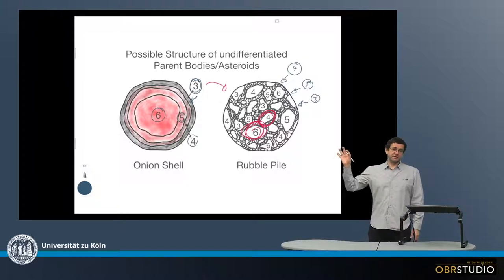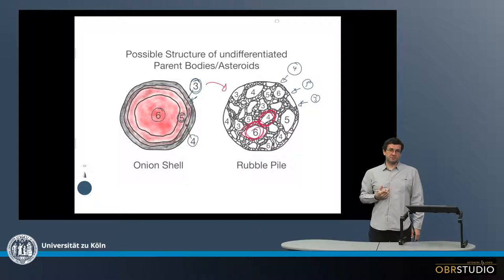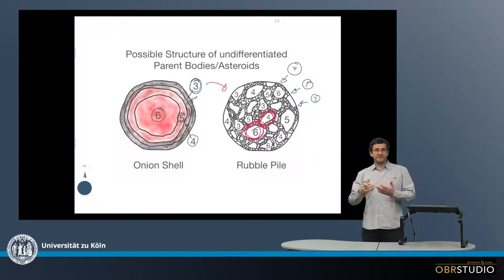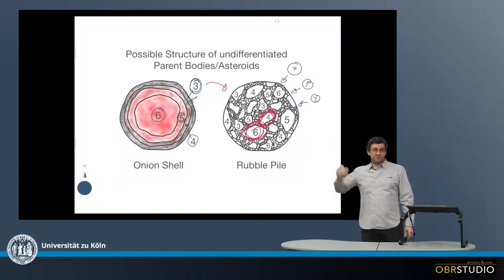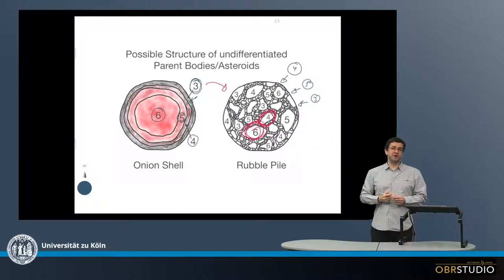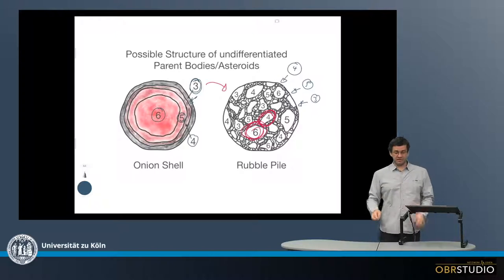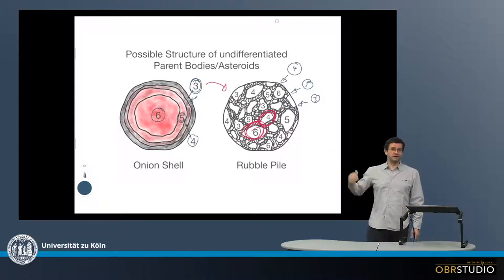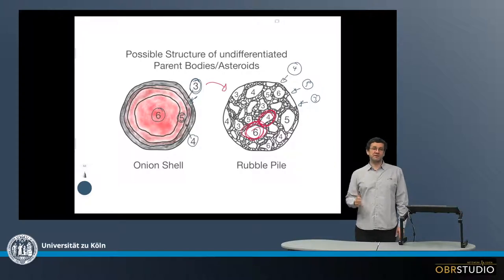These are the different types of lithologies and parent bodies we think existed, because we also have very good evidence from dating in correlation with petrologic type that onion shell asteroids exist. So most likely, all these different types of asteroids existed in the early solar system — or even exist today, of course, though nowadays they're not hot anymore. And these are the different types of undifferentiated meteorite parent bodies.